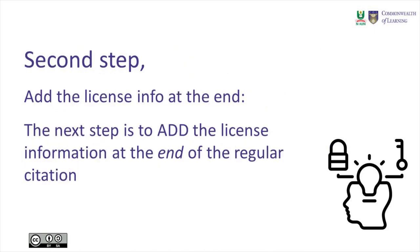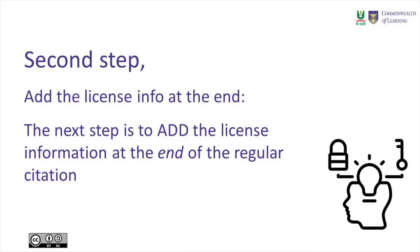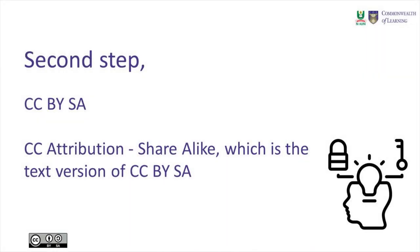The second step is adding the license info at the end. If you need to use this citation style, the only difference is that you just need to add the Creative Commons license at the end of your citation. This is where you need to pay attention to the license that comes with each of these videos or images you choose to use. That's where knowing those symbols — like Creative Commons CC BY-SA — comes in handy. You can either use the acronym like CC BY-SA or the text version like Creative Commons Attribution Share Alike.